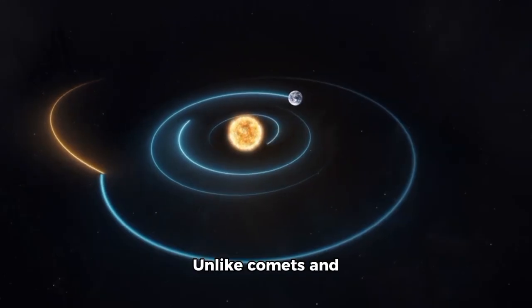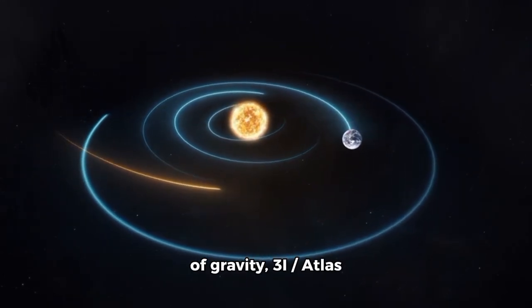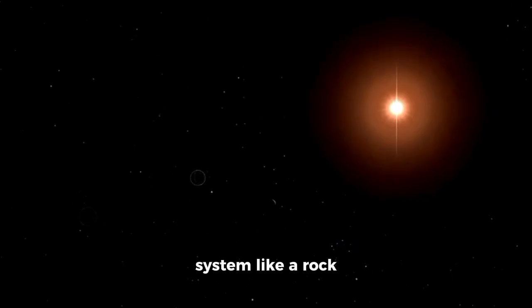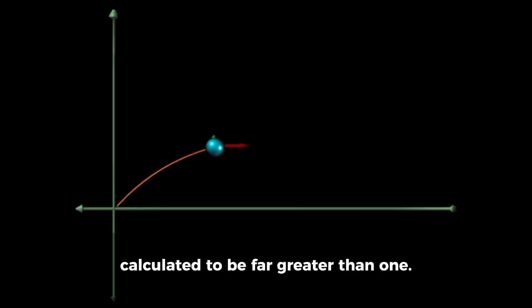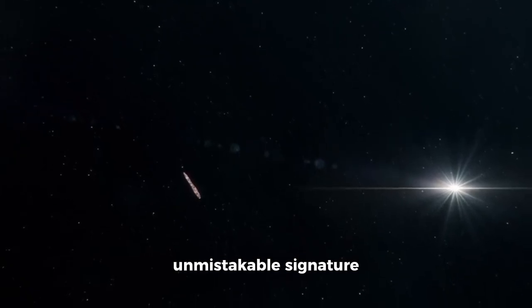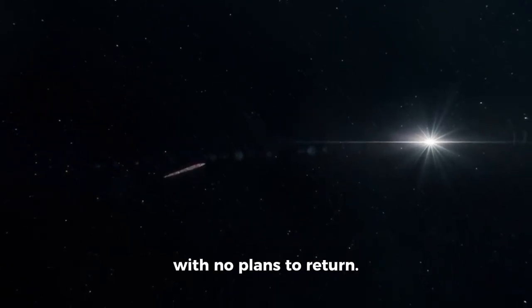Unlike comets and asteroids held by the sun's fragile threads of gravity, 3I Atlas entered our solar system like a rock skipping across a pond. Its orbit's eccentricity, a measure of how stretched it was, calculated to be far greater than one. This was the unmistakable signature of a hyperbolic path, an interstellar visitor with no plans to return.